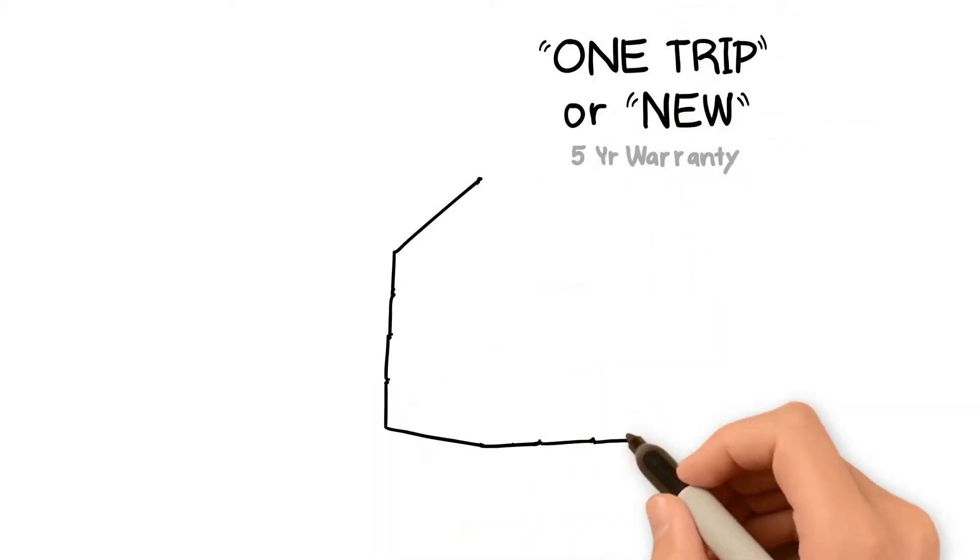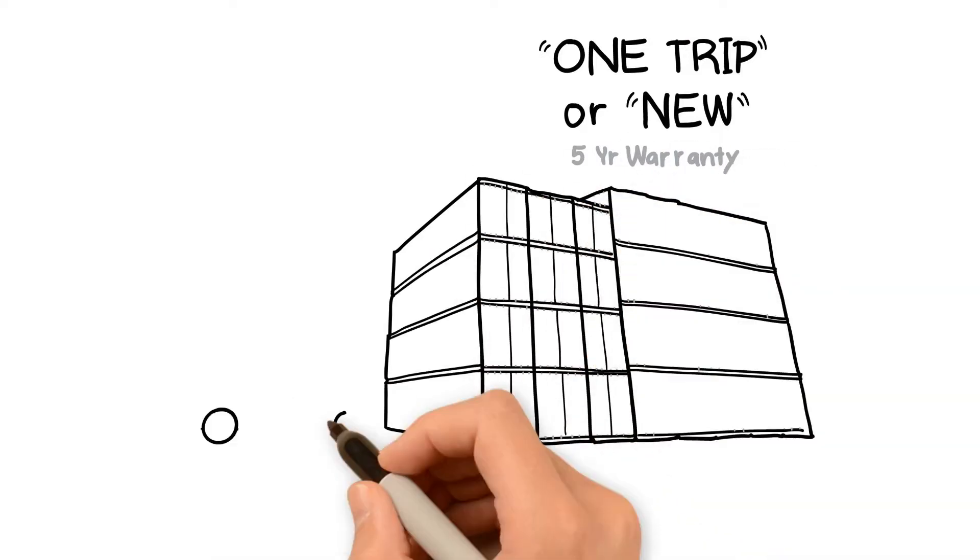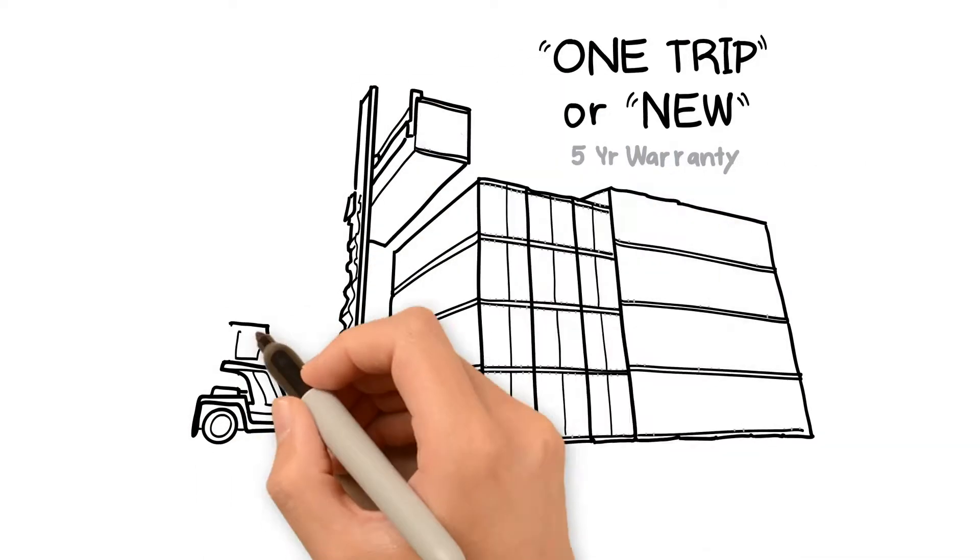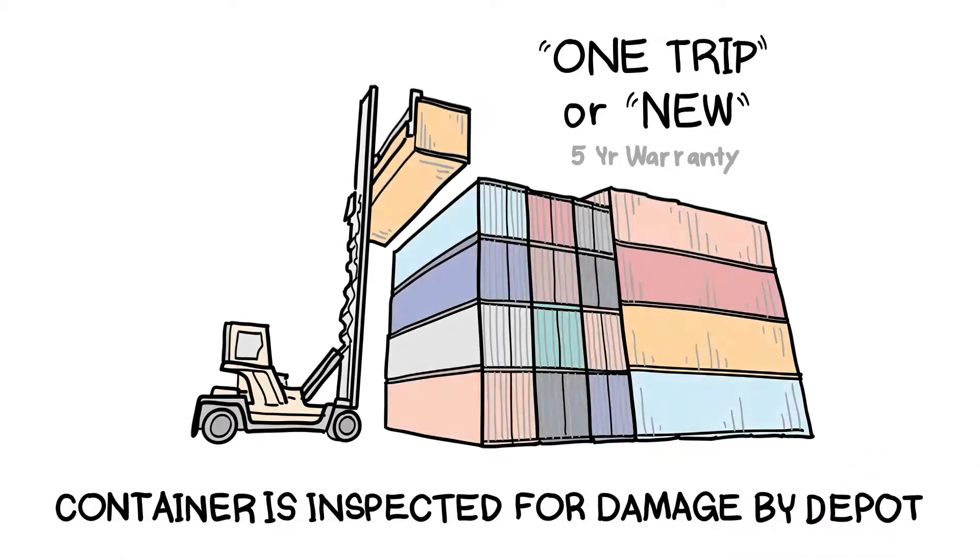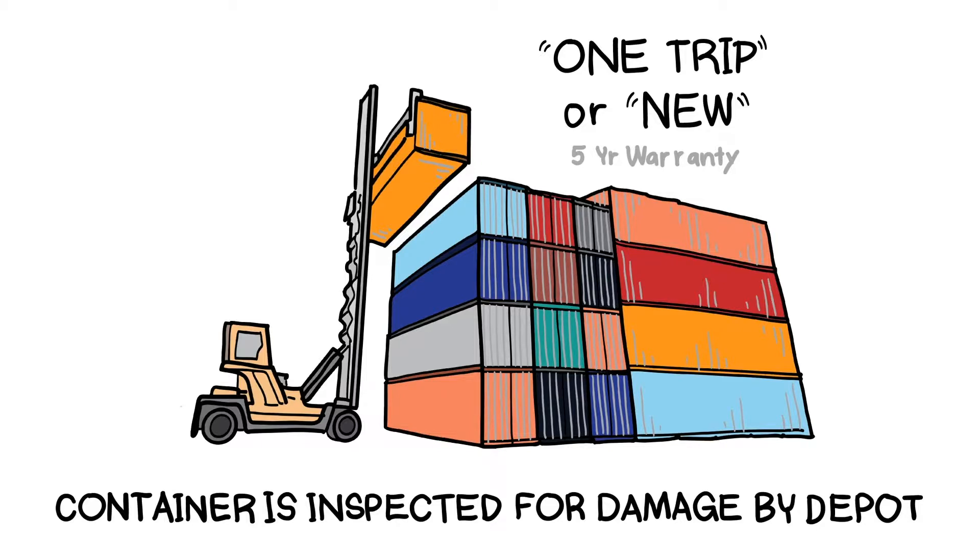If the container was built for immediate sale versus cargo, it's classified in our premium condition, one trip, and placed in our sale inventory. This is as close to new as you can buy in the U.S. market.